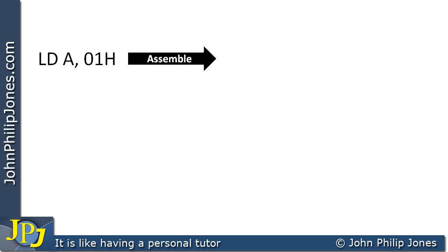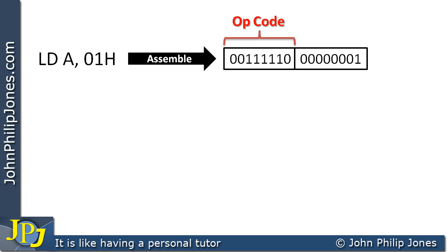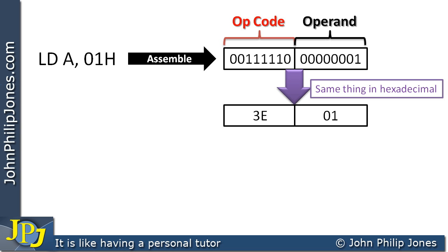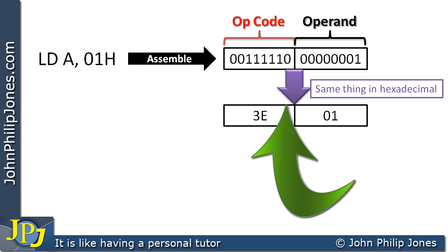We assemble the instruction into its machine code, which looks like a binary pattern — that is the opcode for load A with a number. The operand is 01, which is a byte representing binary 1. Since binary is difficult to remember, machine code programmers use hexadecimal. Converting this binary to hex, the opcode becomes 3E and the operand is 01.